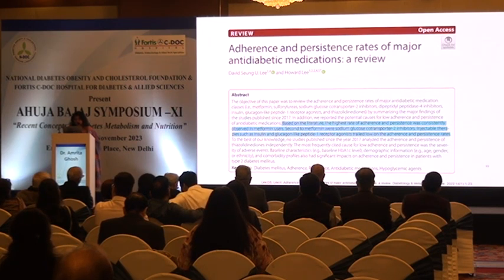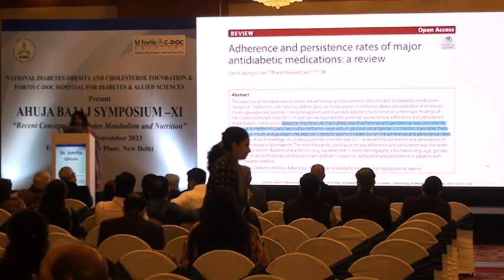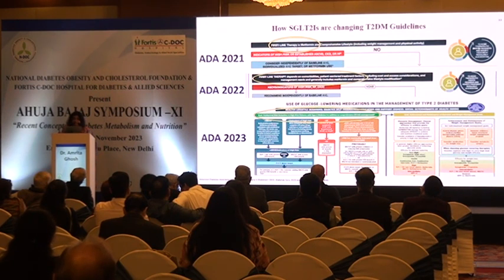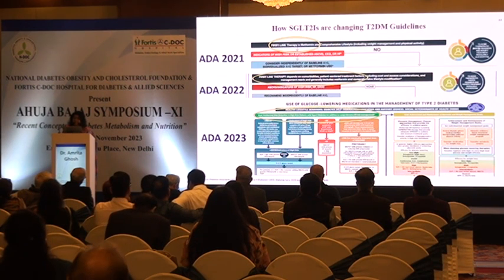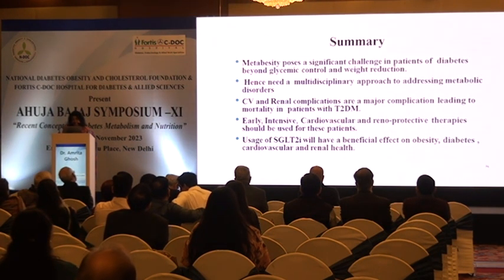A major issue with patients is adherence. Studies show patients are most adherent to metformin, second to SGLT2 inhibitors, and third to GLP-1 agents since patients dislike injections. You should always use a molecule your patient will be adherent to. Across ADA guidelines from 2021 to 2023, SGLT2 inhibitors have been given a promising position as first-line therapy, with criteria covering patients with ASCVD, high cardiovascular risk, and heart failure — you can place this molecule in those situations, being careful in certain patients.